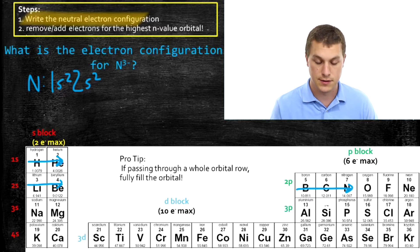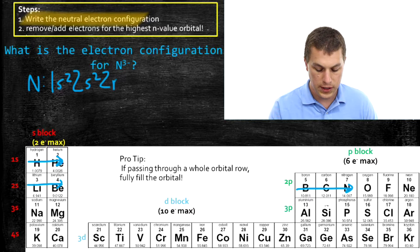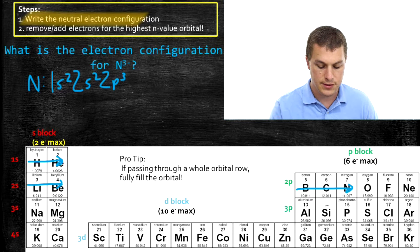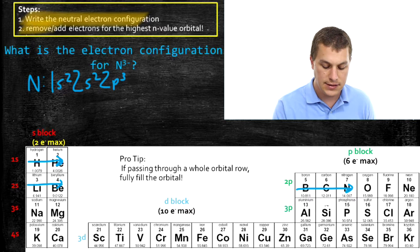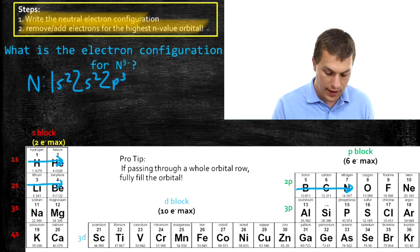2s2 from the two boxes in the 2s, 2p3 from the three boxes in the 2p. Now what we do is we add or remove electrons for the highest n value orbital. What's the n value? Well, the n value are these guys right here.